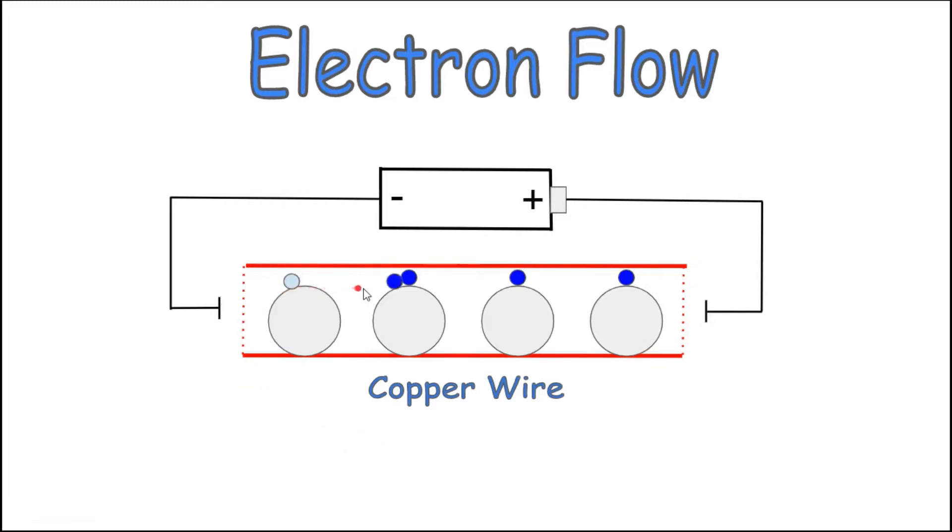Once this electron gets pushed in, it knocks these electrons off of each successive atom and then knocks the last electron out to the positive terminal. The first electron that came in is still in the wire. It didn't make it all the way through the wire. It basically just displaced this electron over here.